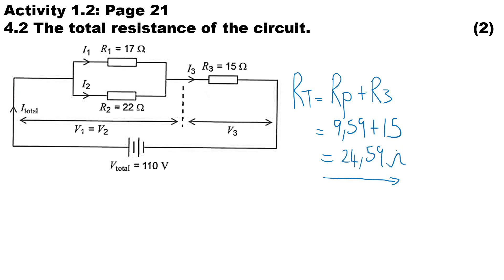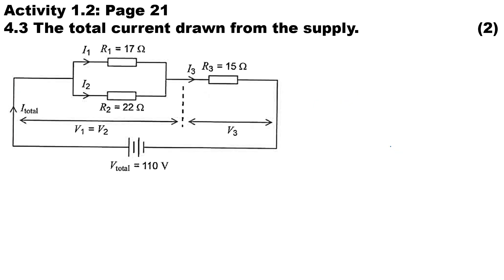Okay, moving on to 4.3: calculate the total current drawn from the supply. So to calculate I total, it will be V total over R total. The total voltage is given to us, it's 110 volts, and the resistance total is 24.59, and therefore the current in amperes will be 4.473 amperes.